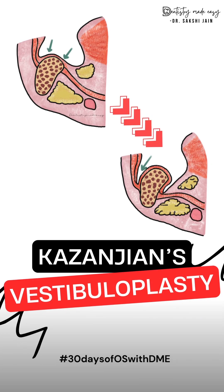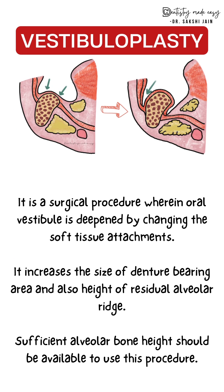Moving towards the next topic, that is Kazanjian vestibuloplasty. Vestibuloplasty can also be called a ridge extension procedure. It is the procedure to increase the depth by uncovering the existing basal bone of the jaws surgically and repositioning the mucosa and muscle attachment to the lower position in the mandible or the superior position in the maxilla. In short, it is the deepening of the vestibule without any bone addition, also known as sulcoplasty or sulcus deepening.